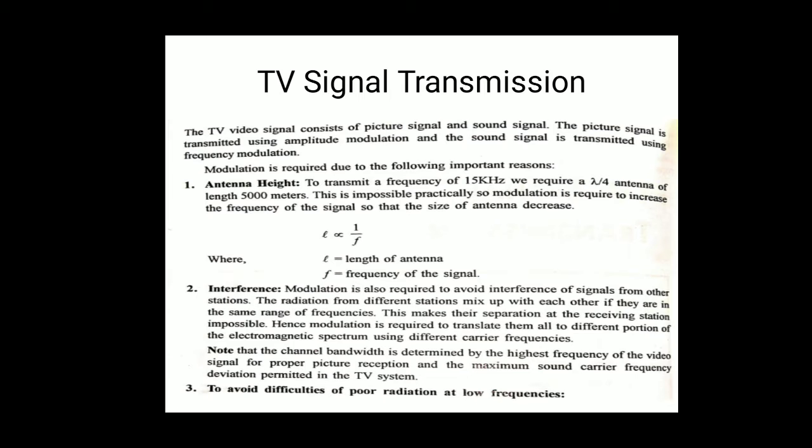So modulation is required to increase the frequency of the signal so that the size of the antenna decreases. Basically, modulation increases the frequency levels. 15 kilohertz is a message frequency band, but the modulation frequency is high in terms of megahertz. As the frequency increases, the size of the antenna decreases. Basically, length is inversely proportional to frequency.